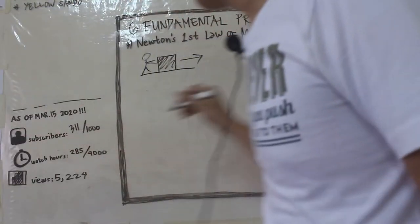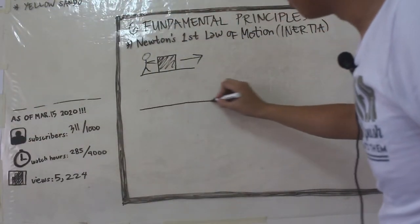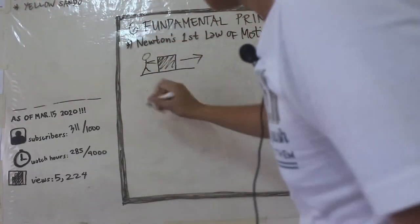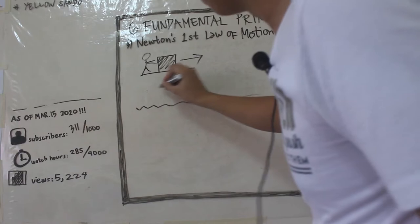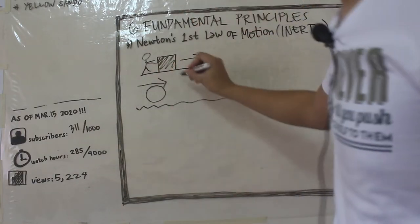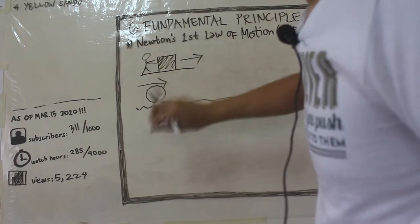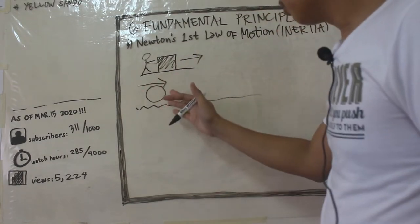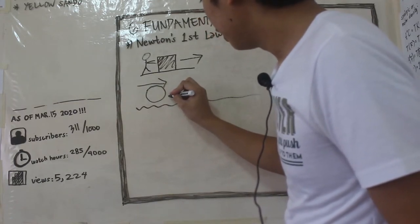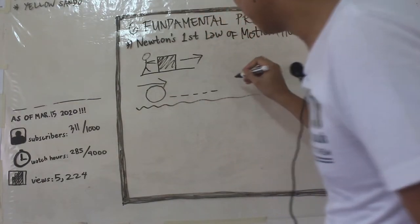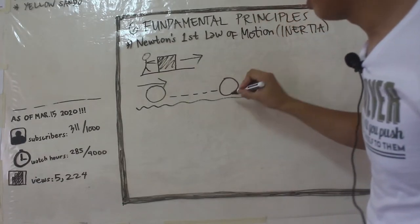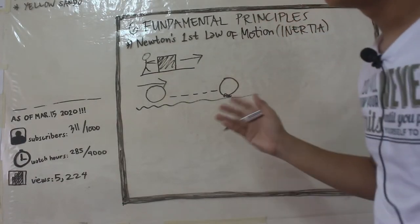Pangalawa, let's say, for instance, may bola na gumugulong. Gumugulong yung bola. So, motion to. Bakit nga ba ang bola, like, habang patagal ng patagal, it will eventually come to a stop. Like, hindi na siya gagalaw dito. Bakit nga ba?